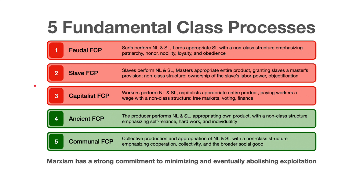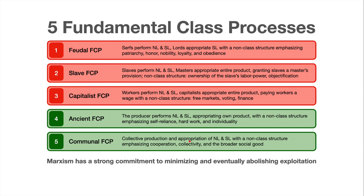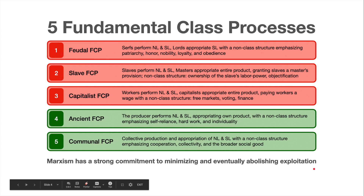The feudal, slave, and capitalist fundamental class processes involve workers producing surplus and someone else taking that surplus — either the feudal lord, the slave master, or the capitalist employer. Then there are non-exploitative class processes that don't involve someone else taking the surplus, such as the ancient fundamental class process, also called independent commodity production or the petty bourgeois class process.